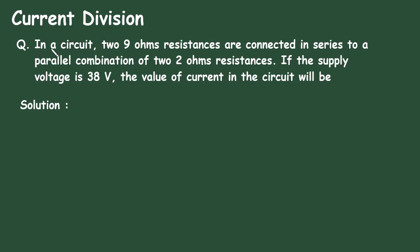Current Division Question. In a circuit, two 9 ohms resistances are connected in series to a parallel combination of two 2 ohms resistances. If the supply voltage is 38V, the value of current in the circuit will be...